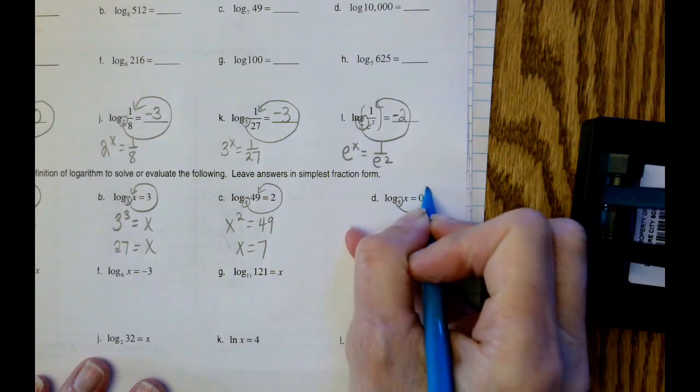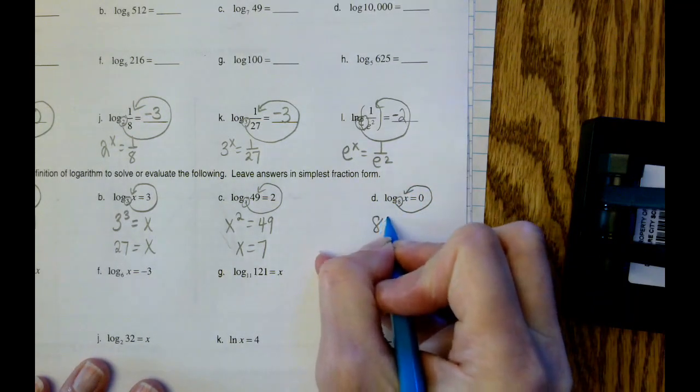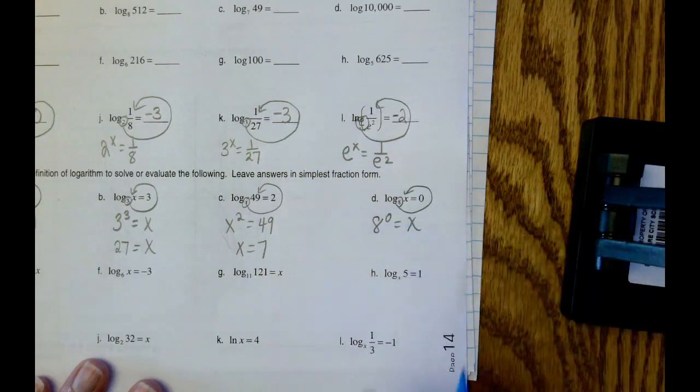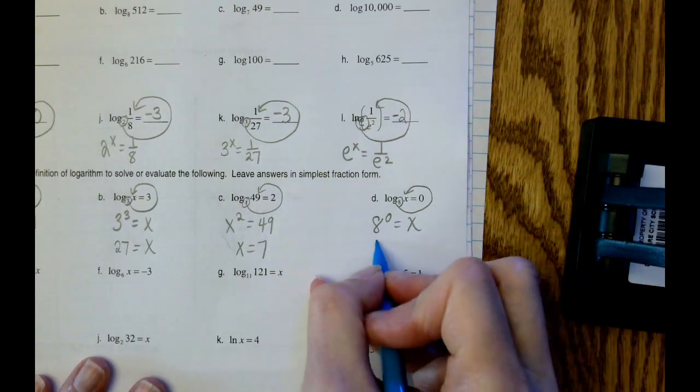Curly q on the letter D. 8 to the 0 equals x. Remember anything to the 0 power is 1.